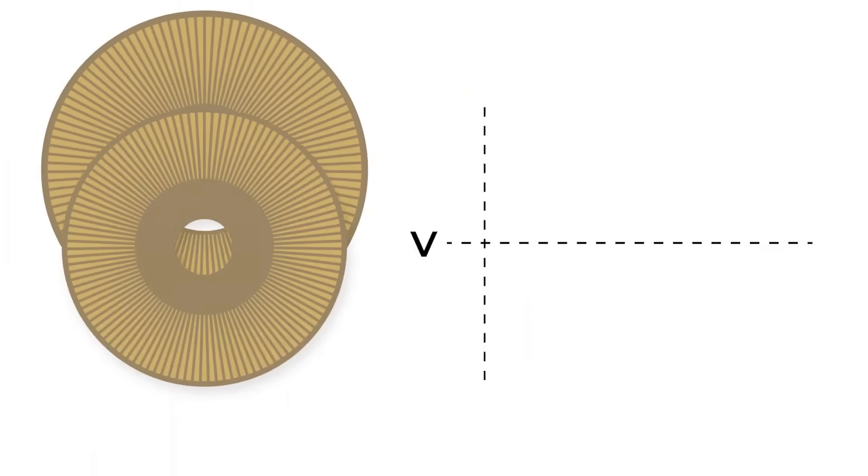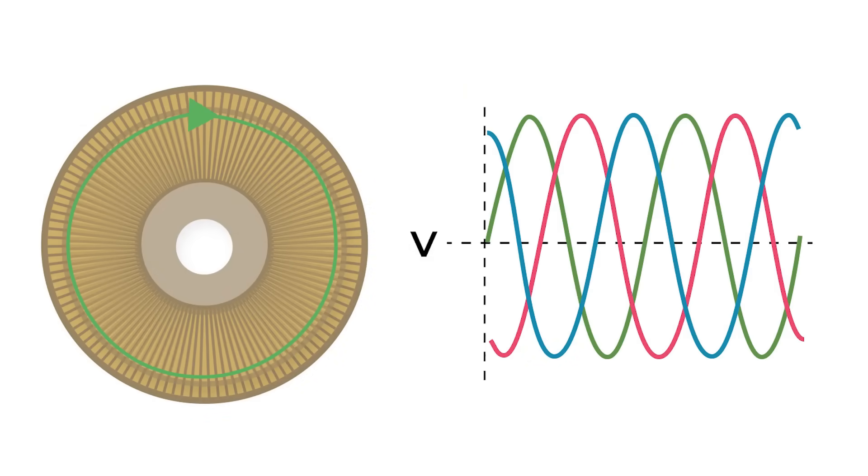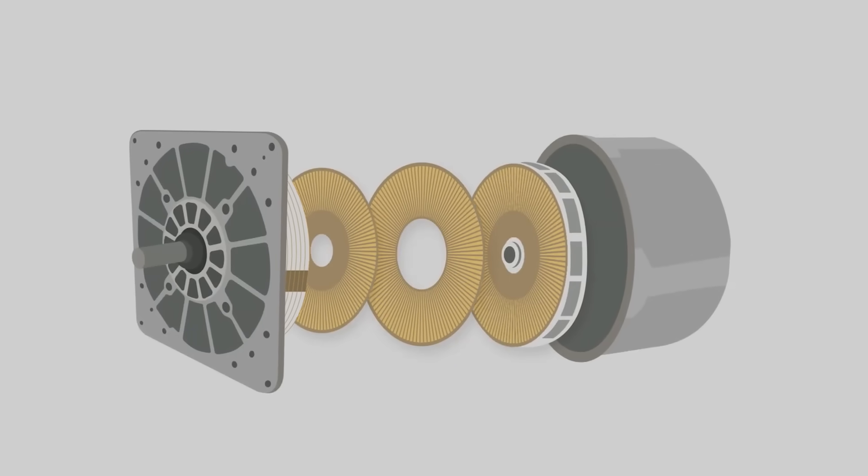However, this dielectric fluid needs very strict parameters because it needs to be a good insulator, a relatively good permittivity, along with having low viscosity so that the rotor can rotate without too much friction.